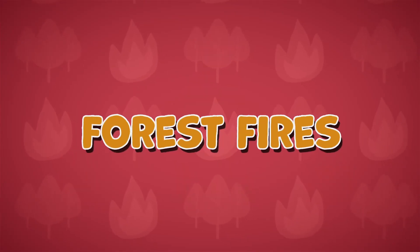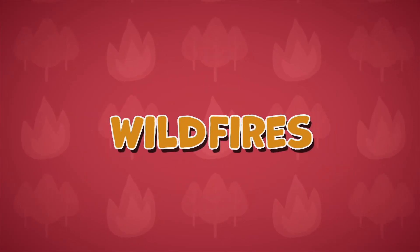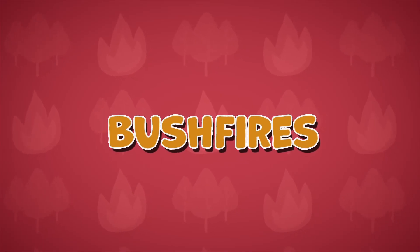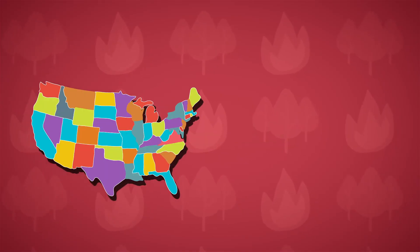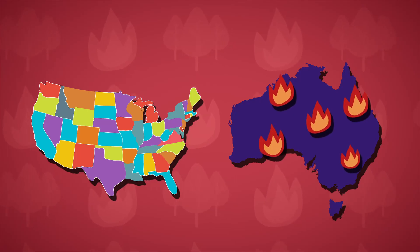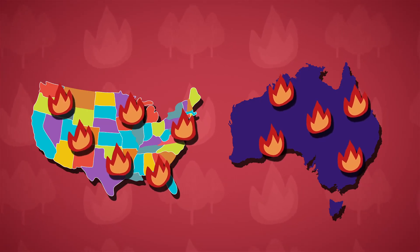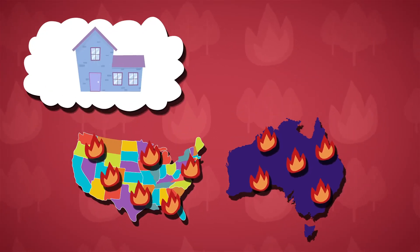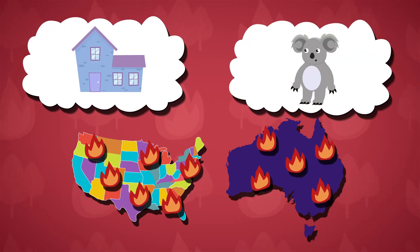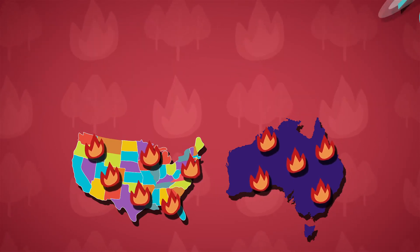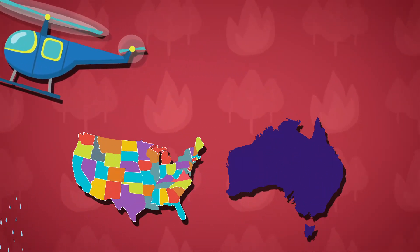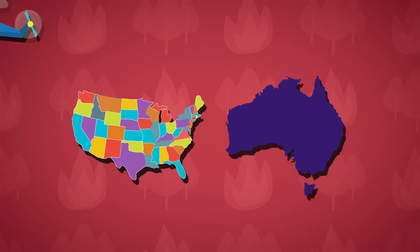Forest fires are known as wildfires, and in Australia they are called bushfires. America and Australia have suffered severe forest fires in the past, which destroyed people's homes and the national wildlife. Forest fires are put out by helicopters that fly above and drop water down onto the flames.